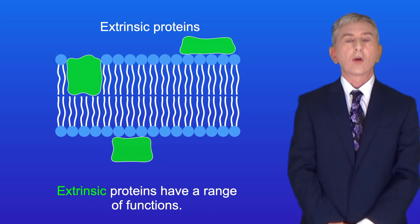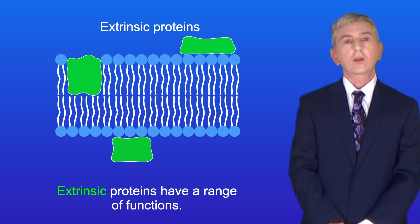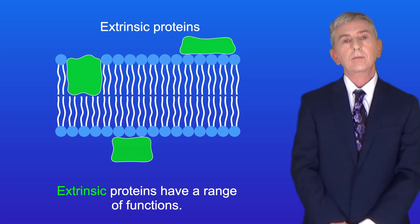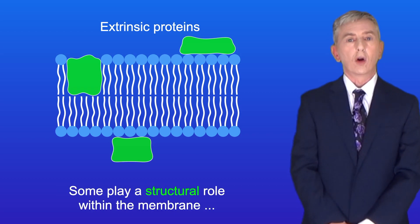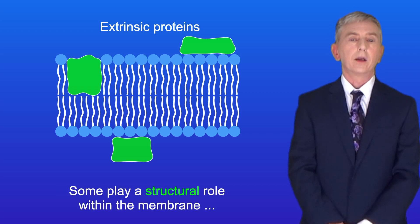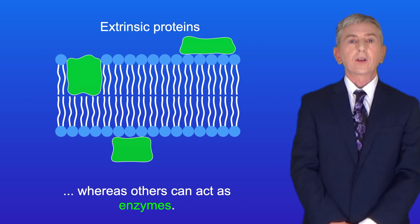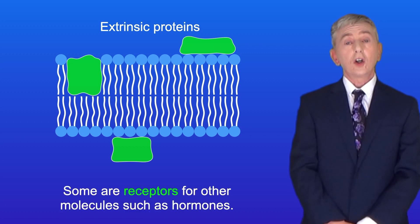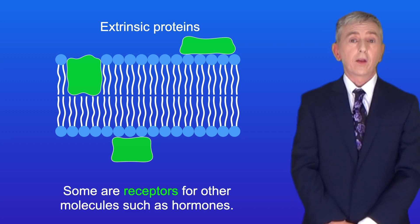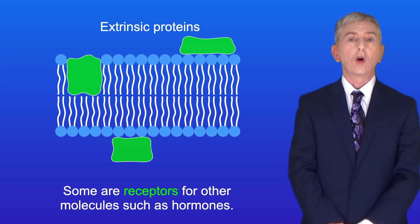Extrinsic proteins have a range of functions. Some play a structural role within the membrane, whereas others can act as enzymes, and some are receptors for other molecules such as hormones.